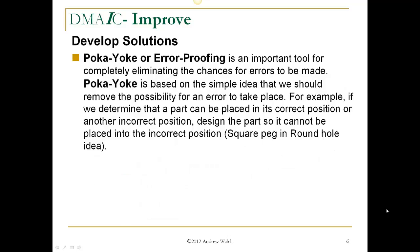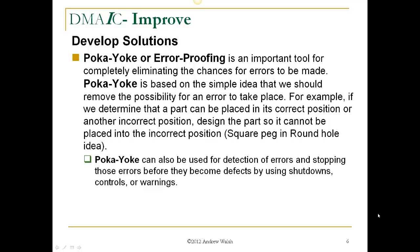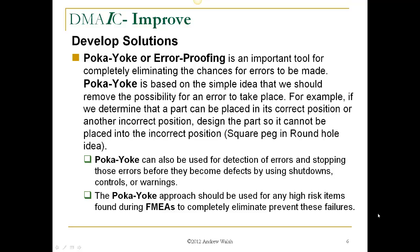Poka-yoke, or error proofing, is an important tool for completely eliminating the chances for errors to be made. Poka-yoke is based on the simple idea that we should remove the possibility for an error to even take place. For example, if a part can be placed in an incorrect position, design the part so it cannot be placed incorrectly — a square peg in a round hole. The three-prong adapter for electrical outlets is a good example; it cannot be put in incorrectly. Poka-yoke can also be used for detection of errors, stopping them before they become defects, using shutdowns, controls, or warnings. The poka-yoke approach should be used for any high-risk items found during FMEAs to completely eliminate or prevent these failures.